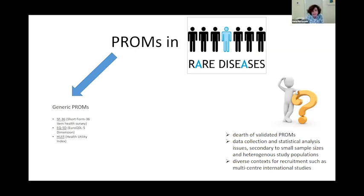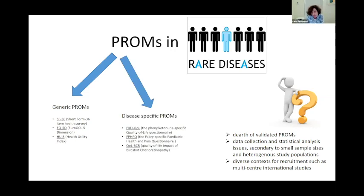The PROMs available for use in rare diseases include generic PROMs such as the Short Form 36-item survey, which was the most used PROM in rare diseases more than ten years ago, the EuroQoL five-dimension (EQ-5D), or the Health Utility Index. There are also disease-specific PROMs, such as those in phenylketonuria and Fabry disease, but despite these examples, most rare diseases lack specific PROMs that can be used to better understand the issues that patients with rare diseases experience.